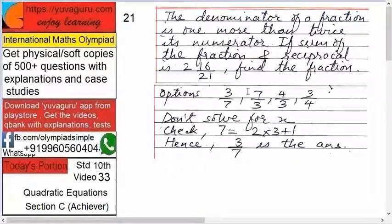Check the options. 3 by 7, 7 by 3, 4 by 3, and 3 by 4. So, it's very simple. One more than twice the numerator. 3 is the numerator. Twice the numerator is 6, and one more is 7. That is 3 by 7.